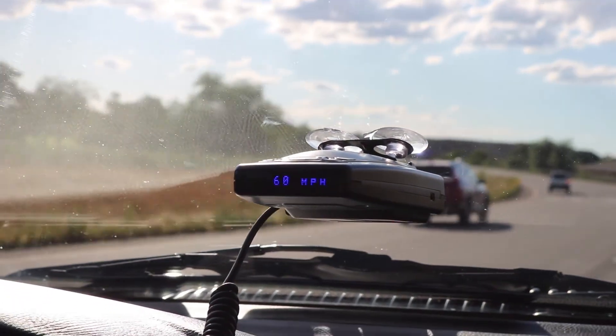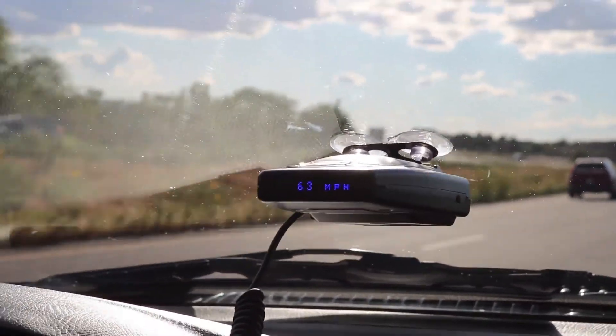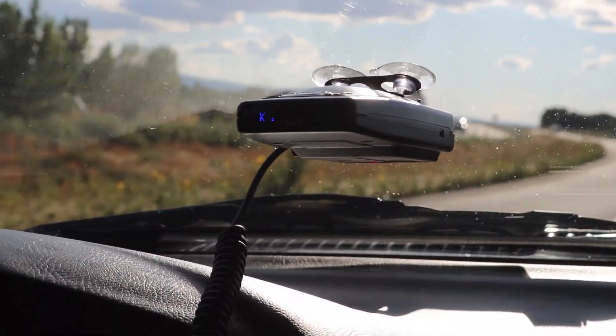Here, our detector is picking up a low-strength K-band. It's one of those signs on the highway that lets you know how fast you're going.